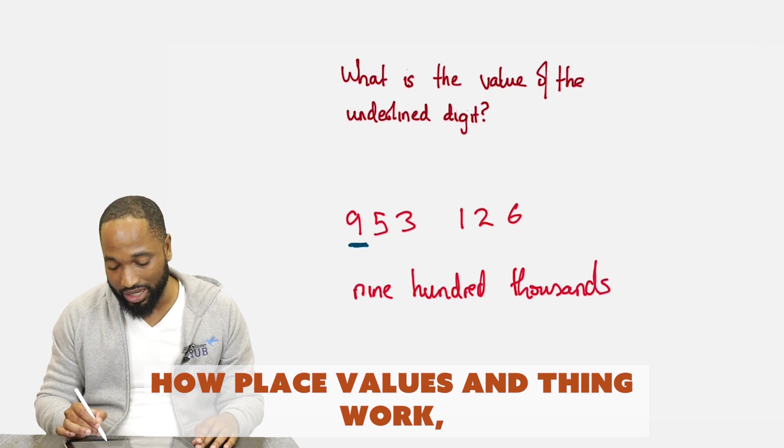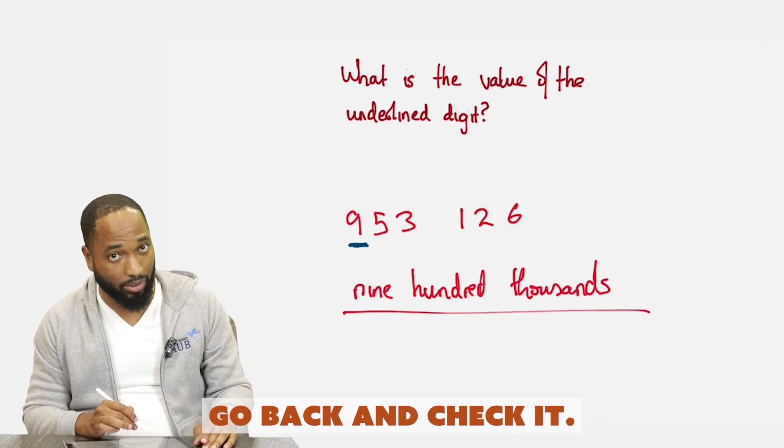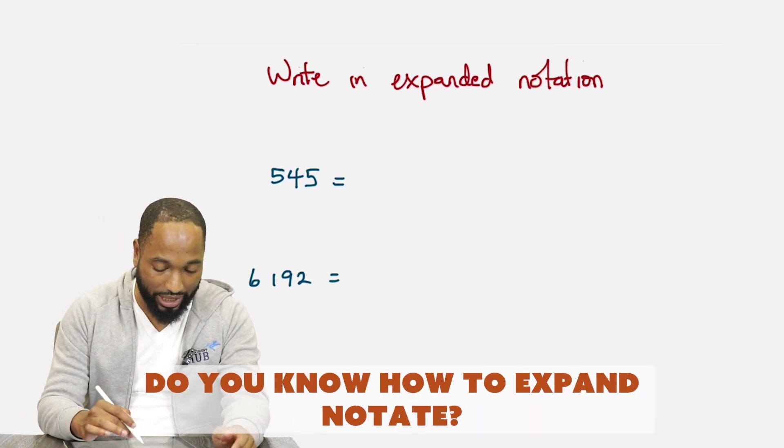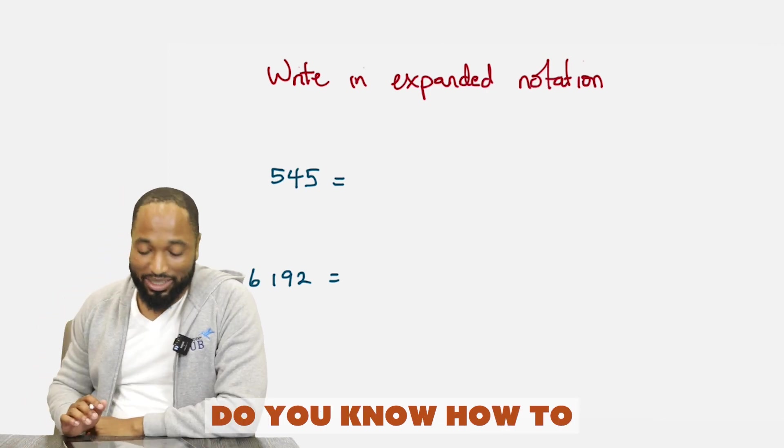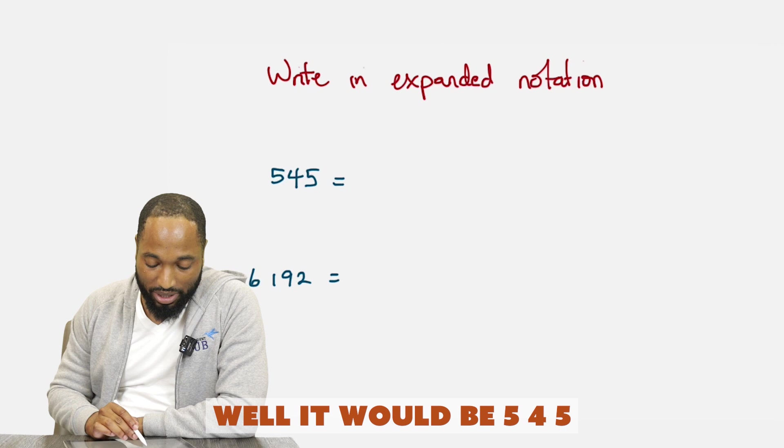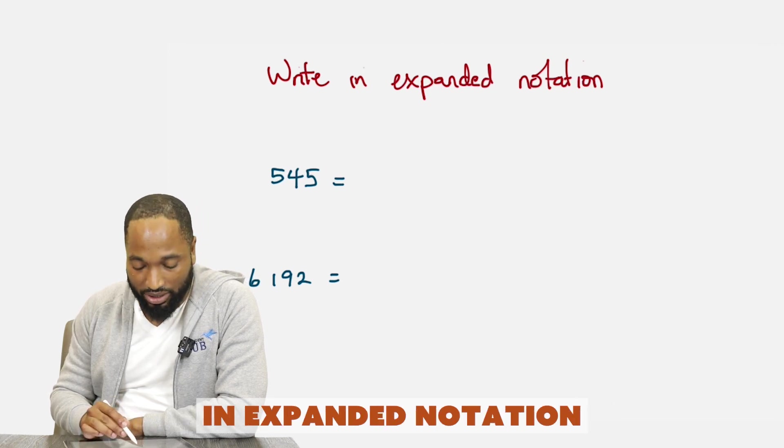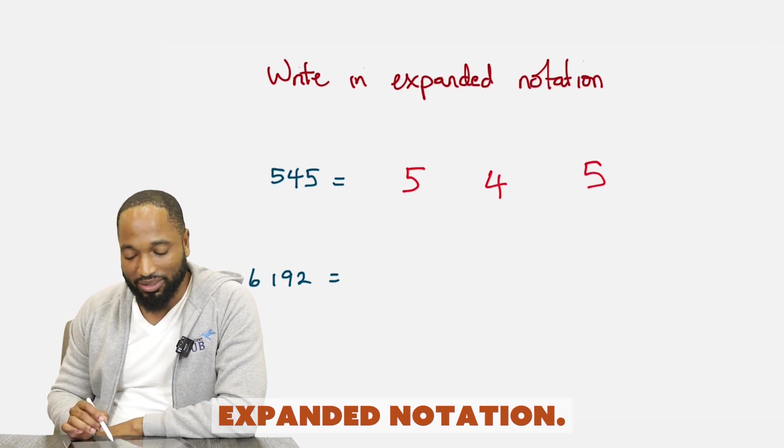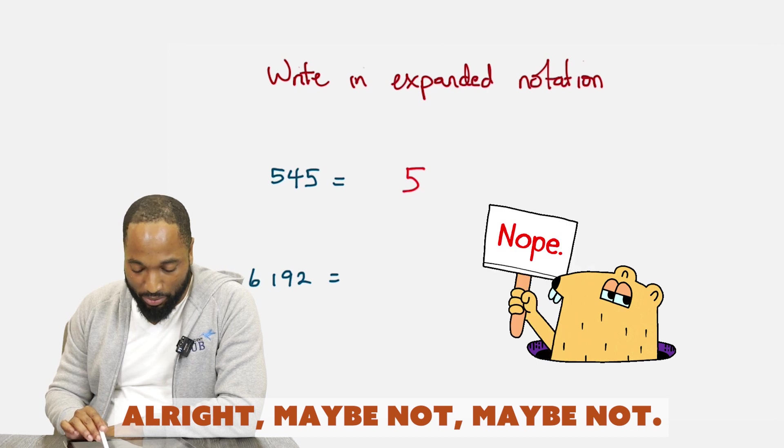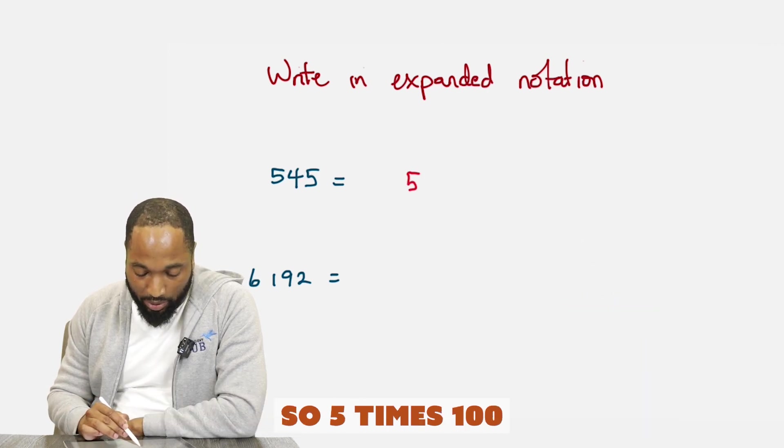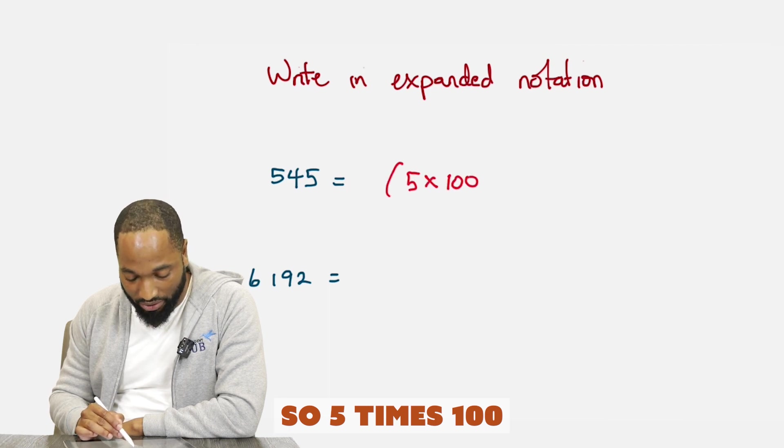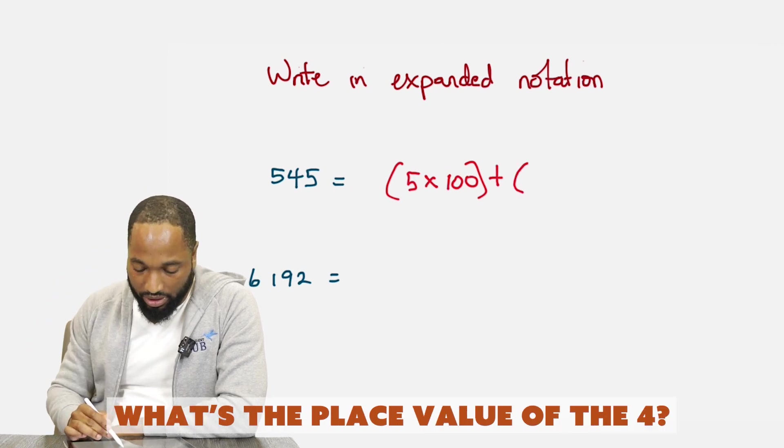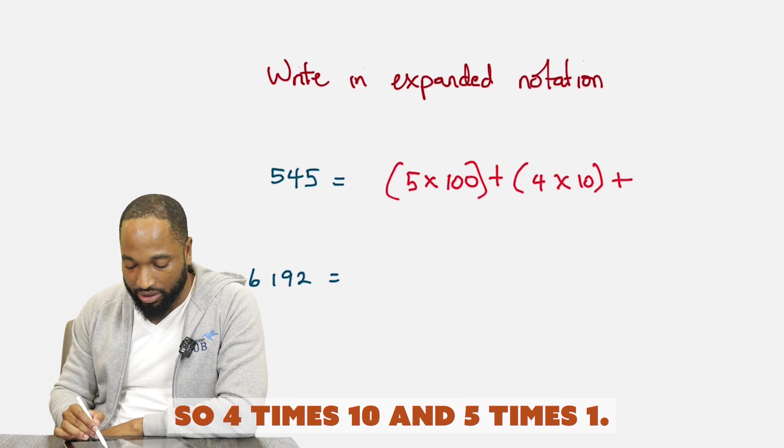Now if you forget how place values and things work, go back and check it. As you're going back and check it too, you should have seen some stuff on expanded notation. Do you know how to expand notate? Do you know how to write in expanded notation? Well, it would be 5, 4, 5. If you want to write that in expanded notation, you might just space it out like this. Expanded notation. Obviously, that's not expanded notation. I just expanded it. So five times one hundred, you multiply the individual digits by the place value. What's the place value of the four? It's ten. So four times ten and five times one.